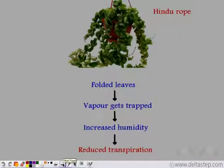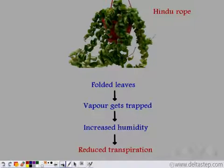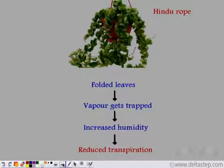Plants that do not have sunken stomata have folded leaves, like the plant known as the Hindu rope. They have folded leaves with stomata, so the stomata release water vapour that gets trapped within the foldings of the leaf. The humidity increases in these foldings and automatically the rate of transpiration decreases. This is another adaptation by which plants like Hindu rope prevent excess water loss from their body.